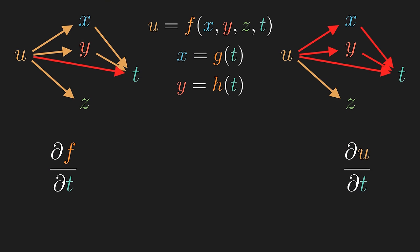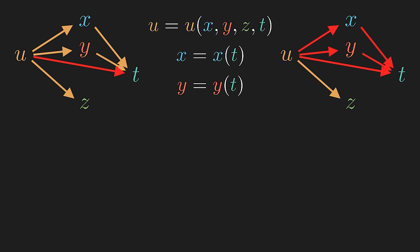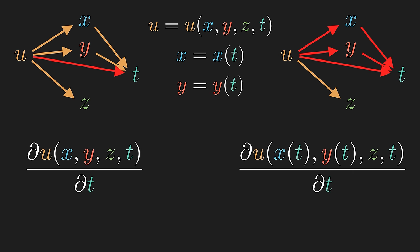Sometimes, it doesn't make too much sense to use different letters for dependent variables and functions. But by blurring the distinction, we are now unable to tell apart derivatives of variables and functions anymore. So, we have no choice but to be explicit with our functional dependence in our notation.